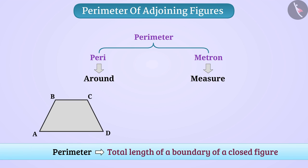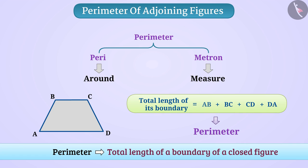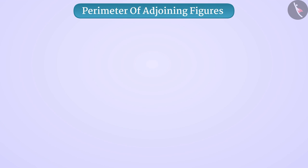Look at this figure. The total length of its boundary can be obtained by addition of AB plus BC plus CD plus DA. This addition will be called the perimeter of this figure. Today, let's learn to find the perimeter of enclosed figures made of squares and rectangles.